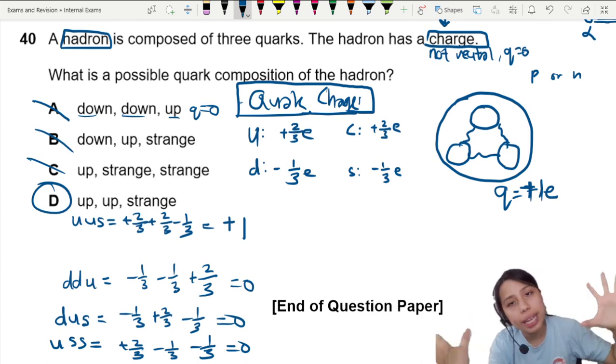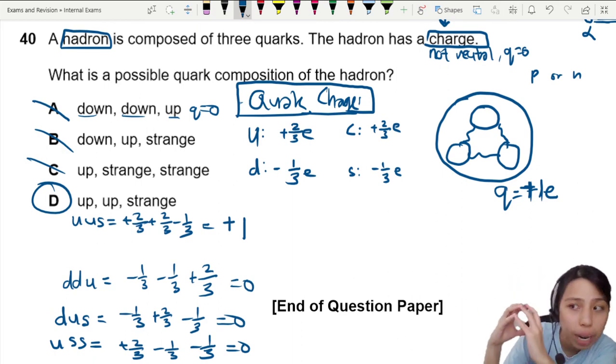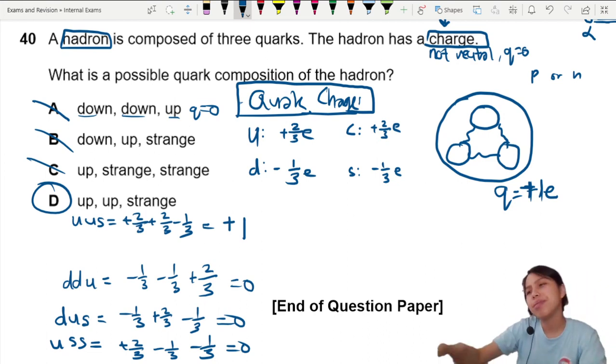And then you do remember when they come together to form a hadron, the charges add together to form a charge of the whole particle. All right, so that's all for this question and for the whole paper also. I'll see you in the next video.